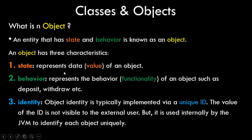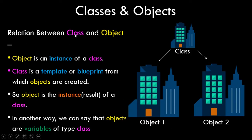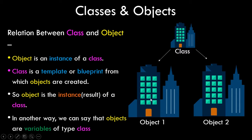An object is basically derived out of a class. The relation between class and object is that an object is an instance of a class. In a real-world scenario, consider a construction site — engineers have a blueprint, which is the prototype and can be considered as a class. When you actually make the building, which is the real-world entity, that can be considered the object.